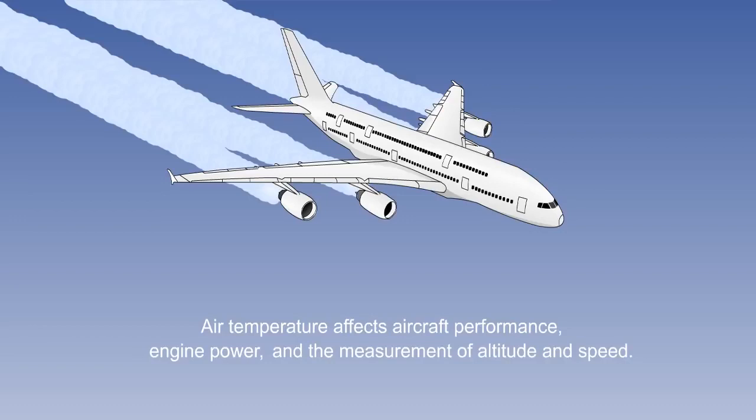Measuring the outside air temperature, however, is not as straightforward as might at first be thought, because the movement of the aircraft through the air will cause the air temperature to rise in the immediate vicinity of the aircraft as a result of friction, or kinetic heating, and air compression, or adiabatic heating. These terms are fully explained in the next lesson. This temperature will not be representative of the true outside air temperature.